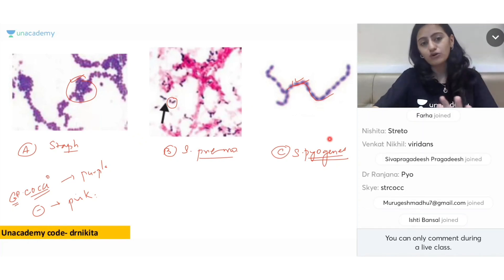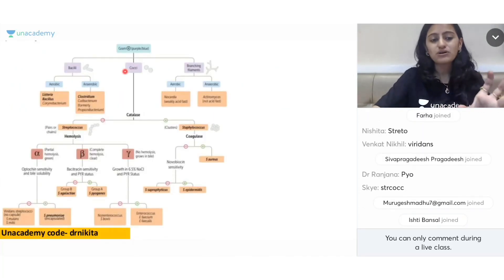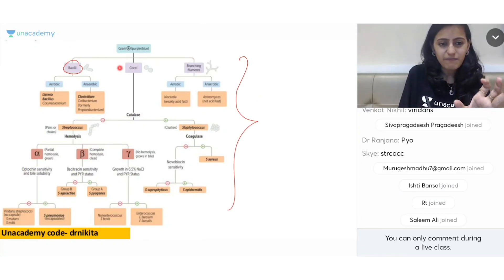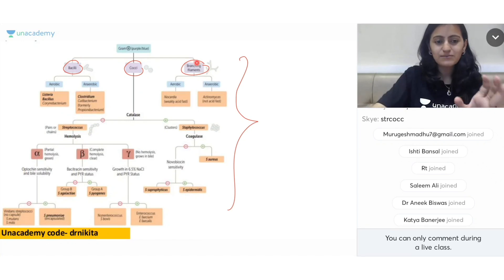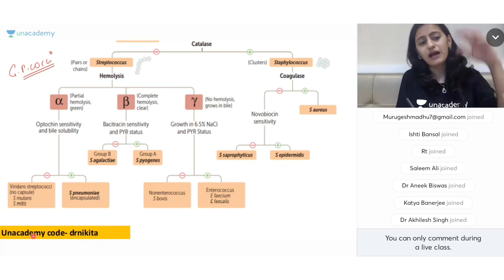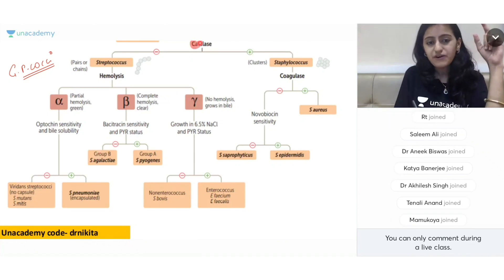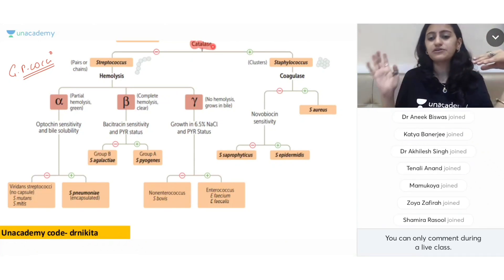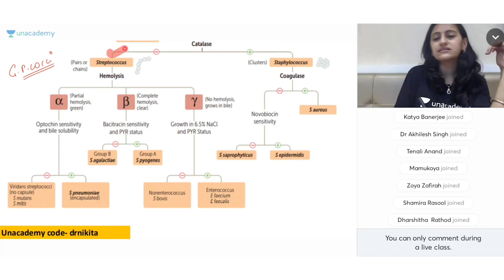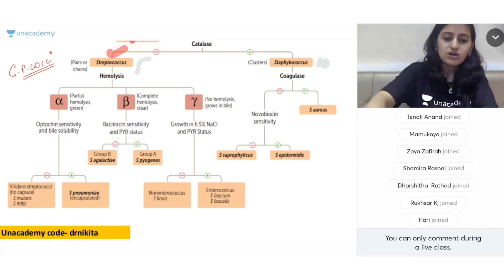Now we are going to see the flow chart for gram-positive organisms. We have gram-positive bacilli, cocci, and branching filaments. The first and very important step for gram-positive cocci is the catalase test to differentiate Staphylococcus versus Streptococcus. Staphylococcus is catalase positive and Streptococcus is catalase negative.